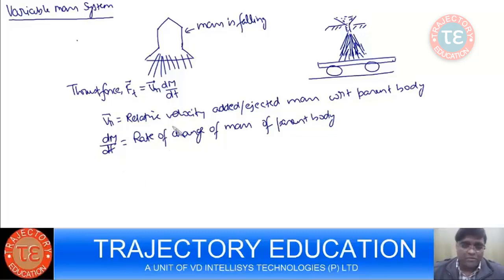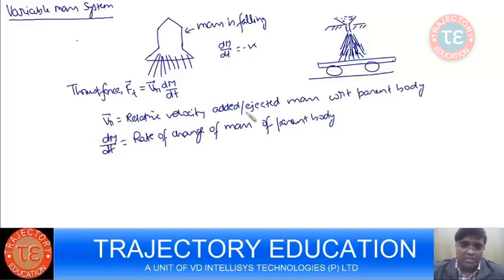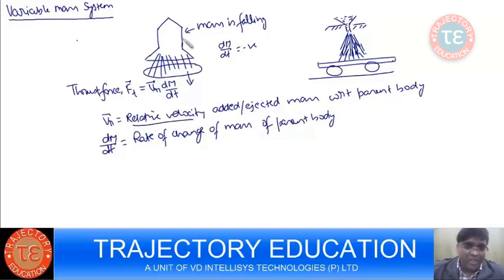There is a third force. In the case of a rocket, dm/dt is negative. To find the relative velocity of the ejected mass with respect to the parent body, I put myself on the rocket. Then the velocity of the ejected mass which I see is the relative velocity.